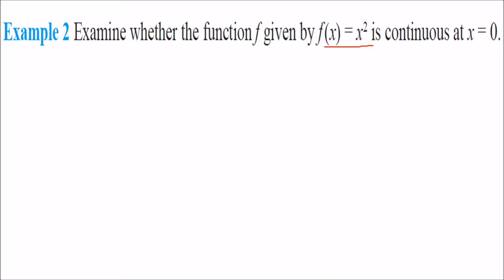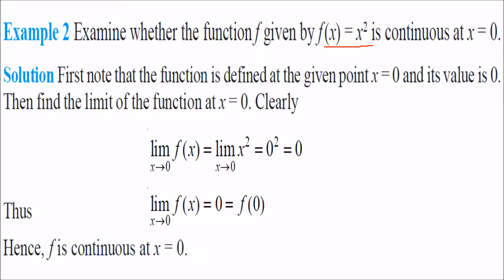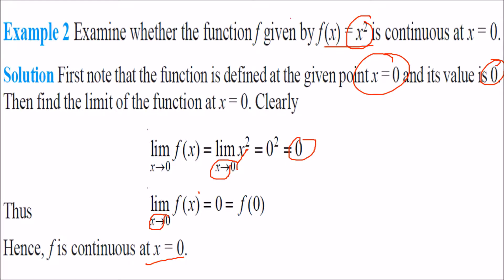Examine whether f(x) = x² is continuous at x = 0. First, placing 0 gives x² = 0, so the function is defined and the value is 0. The limit as x→0 of x² is 0² = 0. Since the value at x = 0 and the limit at x = 0 are both 0, the function is continuous at x = 0.